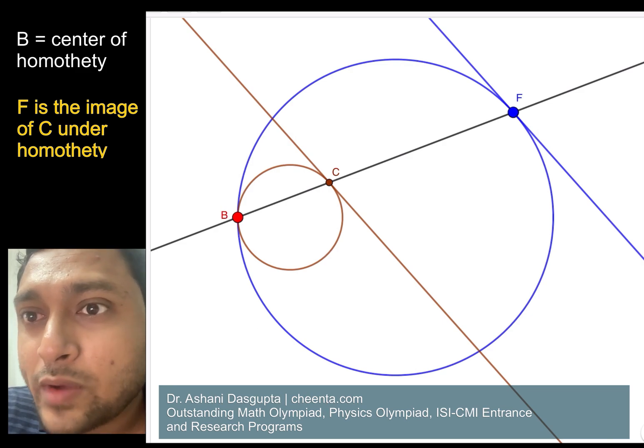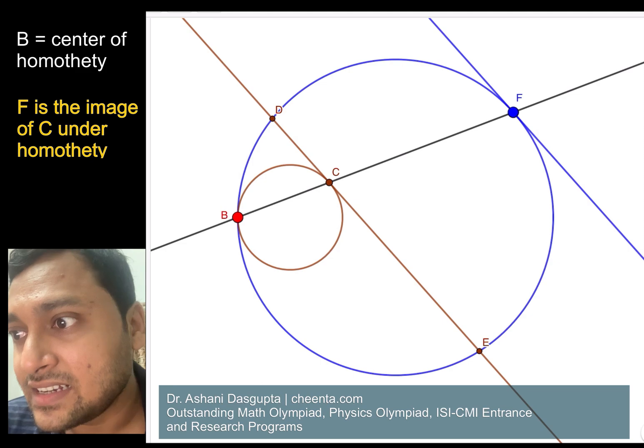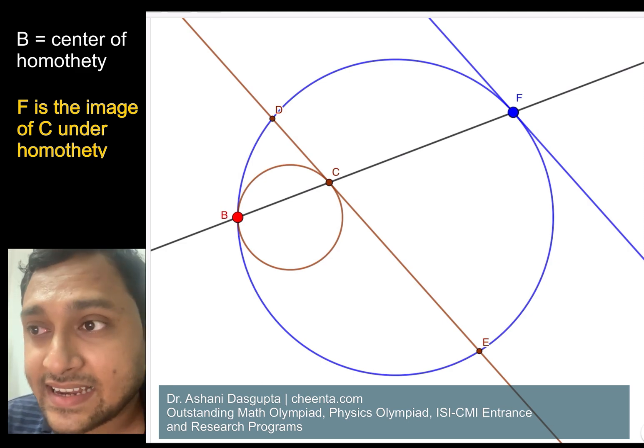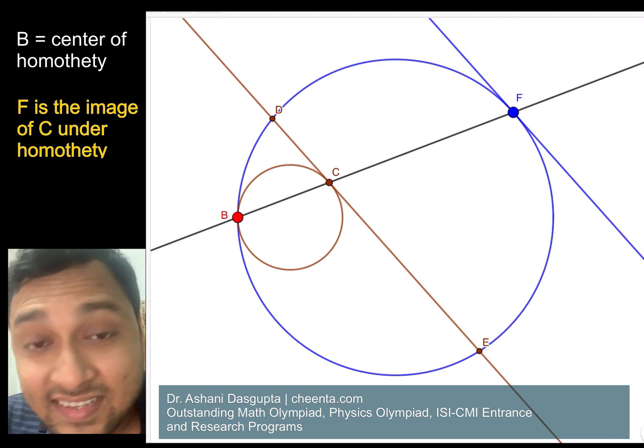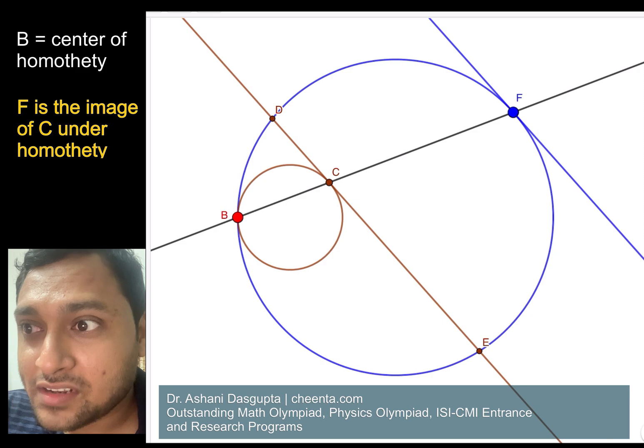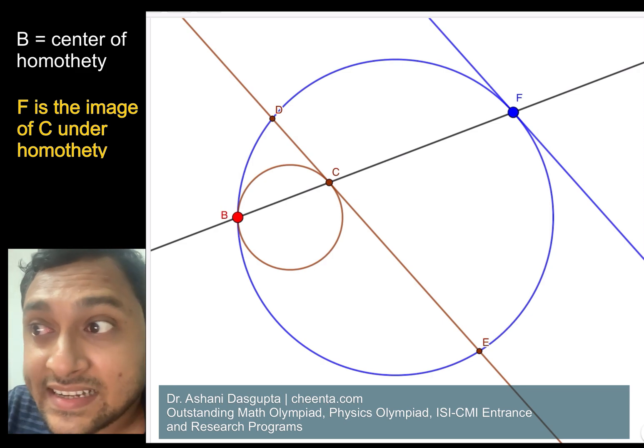So let me just draw the two endpoints of the tangent line, D and E - D and E at the two places where the tangent cuts the blue circle. So now I will draw the two arcs, DF and EF.